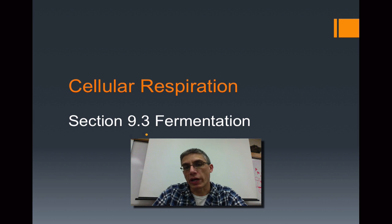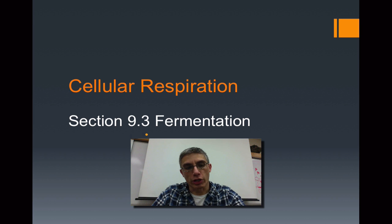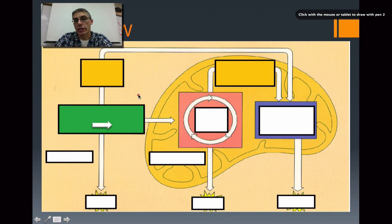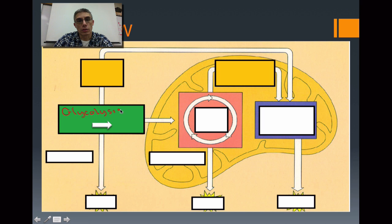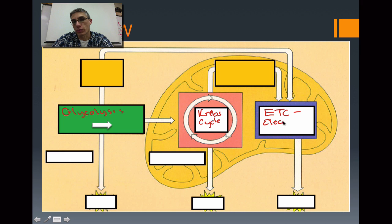I am going to do a little bit of review before we actually talk about this process, but please again make sure that you did make the changes to your rubric. What you see on this screen is all three processes of cell respiration being represented. The one on the far left is going to represent glycolysis, the one in the middle is going to represent the Krebs cycle, and the one on the right is going to represent ETC, or the electron transport chain.